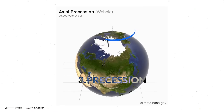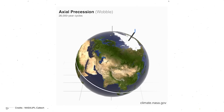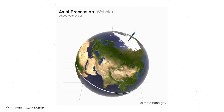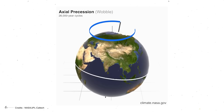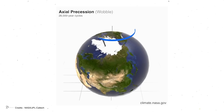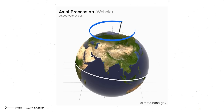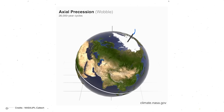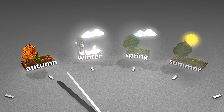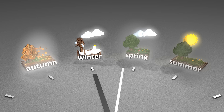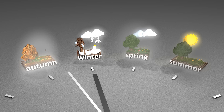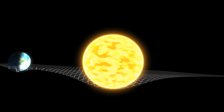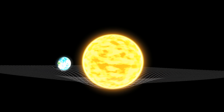3. Precession. Precession is the slow, gradual movement of the Earth's axis of rotation, similar to the wobble of a spinning top. It has a cycle of about 26,000 years. This motion changes the orientation of the Earth's axis in space, which affects the timing of the seasons during Earth's annual orbit around the Sun. This factor is crucial in determining the intensity and duration of the seasons in different parts of the globe, as it modifies the dates on which the equinoxes occur and, therefore, also affects the dates on which the seasons begin and end.